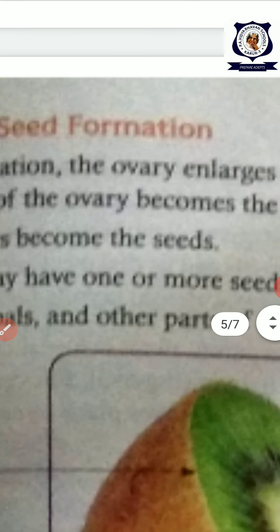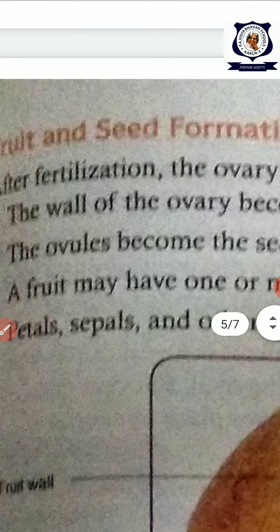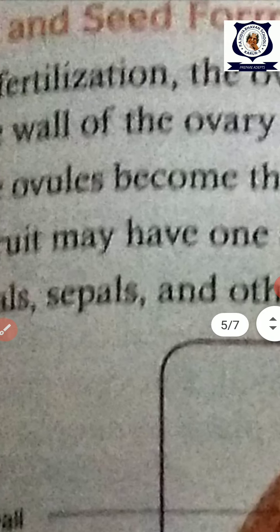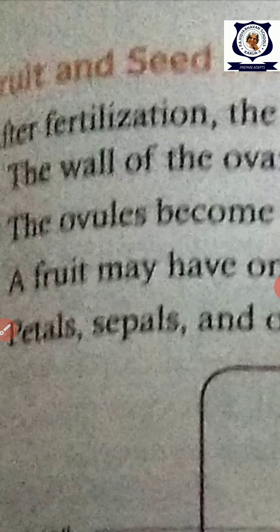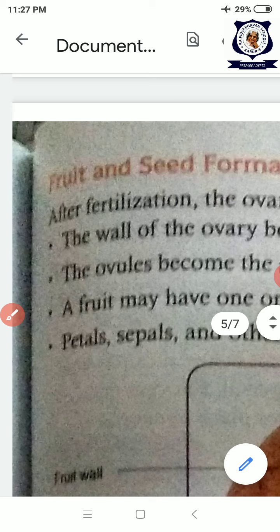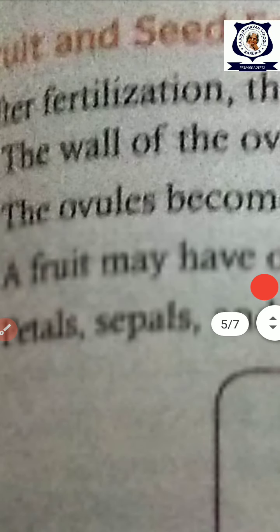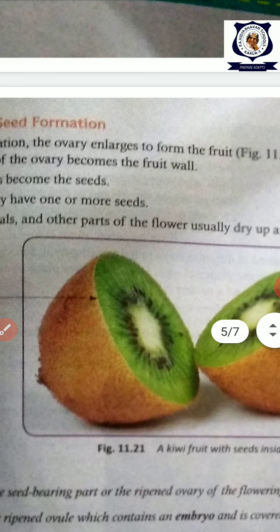After fertilization, the colorful petals dry and fall off. The ovary alone remains. Immediately after fertilization, the ovary becomes the fruit, the ovary wall becomes the fruit wall, and the ovules become the seeds.